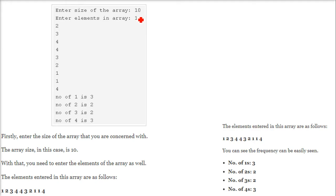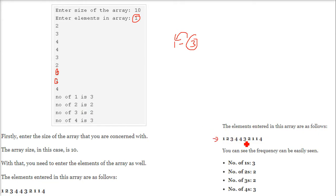For example, 1, 1, 1 — so 1 is 3 times, so 3 is the frequency of 1. This is what we have to print. That is, once this program is executed or run and these are the numbers being entered, you need to be showing the user that number of 1s is 3, number of 2s is 2, like this. So this is what you have to do.